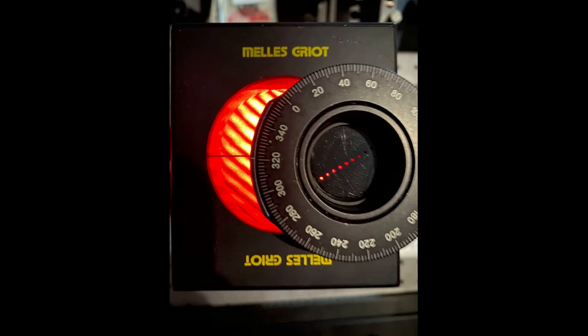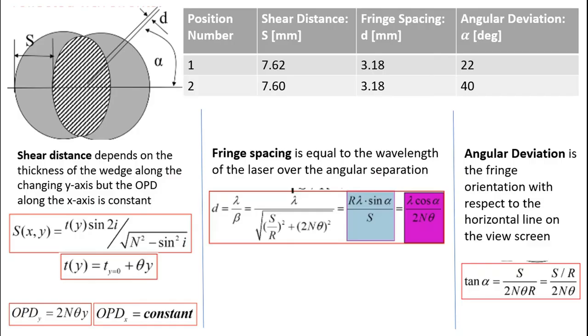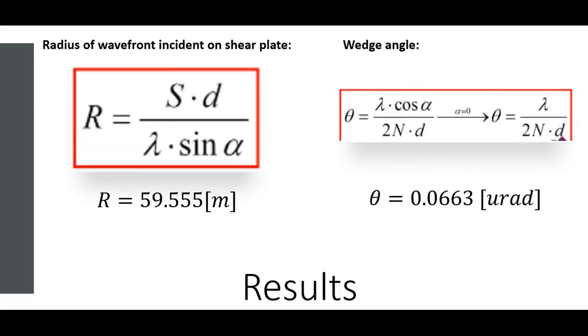Using a ruler and protractor we measured the shear distance, fringe spacing, and angular deviation. From this equation you can see the shear distance is proportional to the thickness of the shear plate itself and depends on angle of incidence on the surface and refractive index. These are our results.